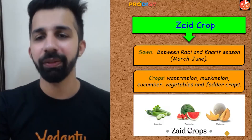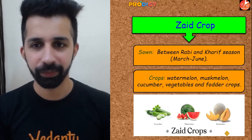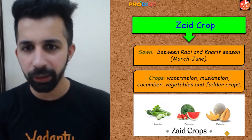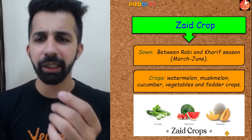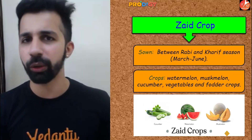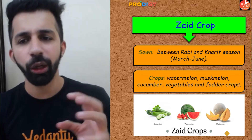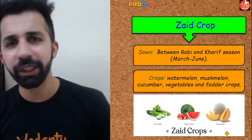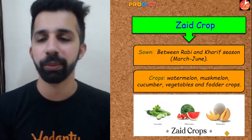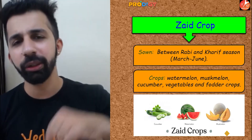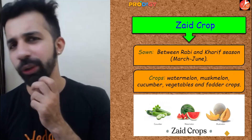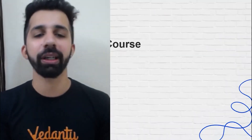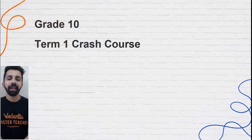The last one is Zaid crops. They are sown between Rabi and Kharif season, that is between March and June. Crops grown in the Zaid season include watermelon, musk melon, cucumber, vegetables, and fodder crops. Find out the meaning of fodder crops — that is your homework!